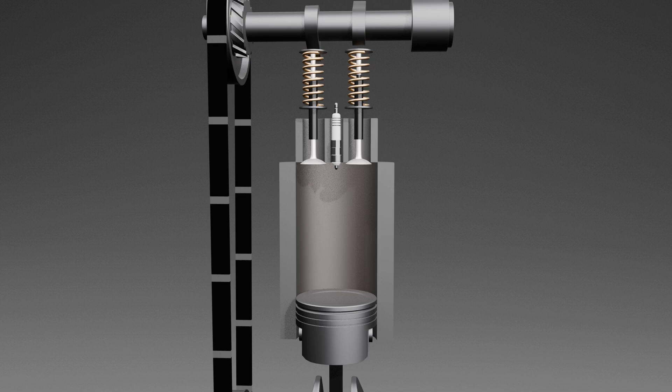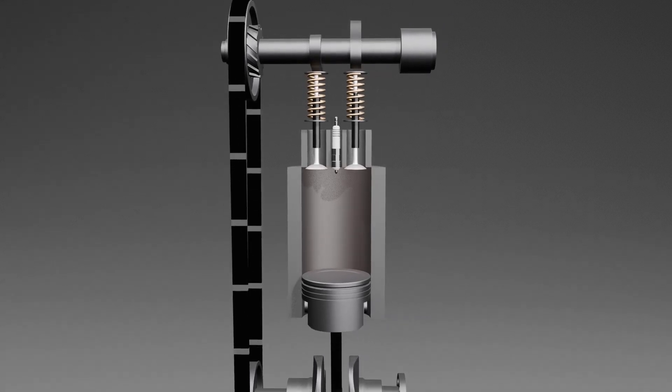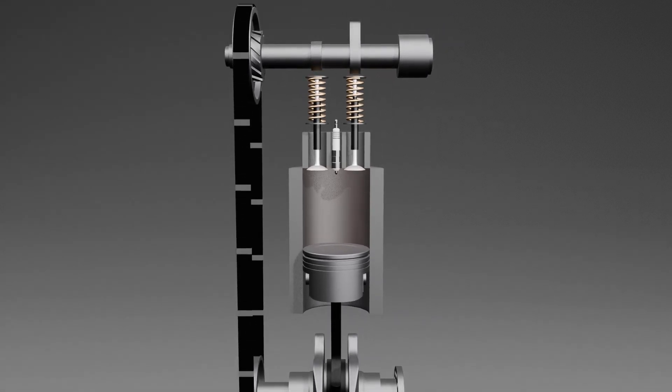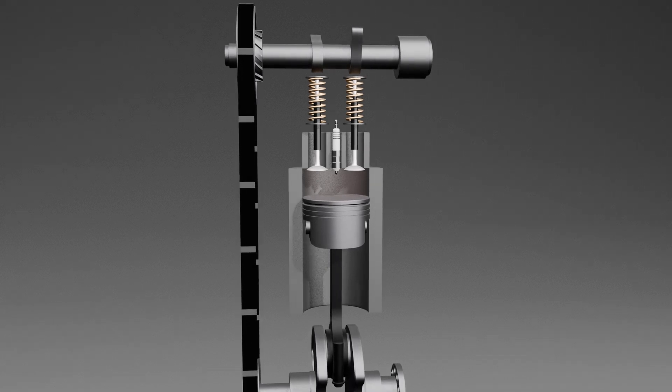After the intake stroke comes the compression stroke. At this stage, the rotating crankshaft forces the piston up the cylinder, compressing the fuel and air mixture into a smaller space at the top of the cylinder.